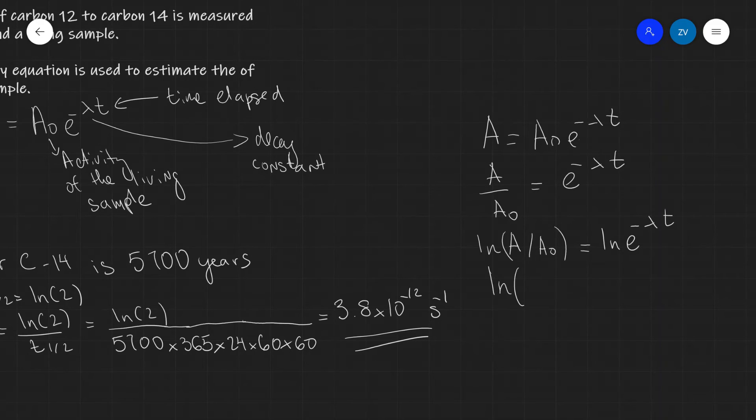What I then get is ln(A/A₀) = -λt. Remember, ln and e are inverse functions, so they undo each other, leaving just -λt.